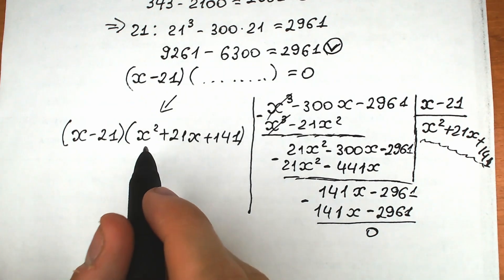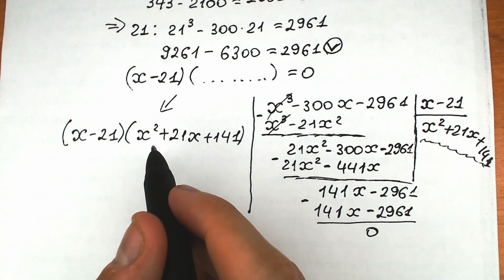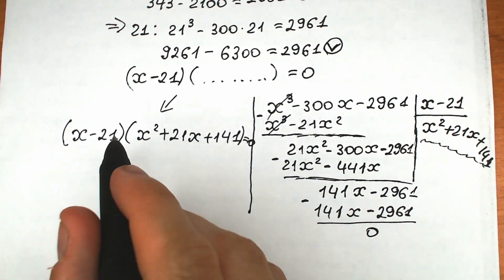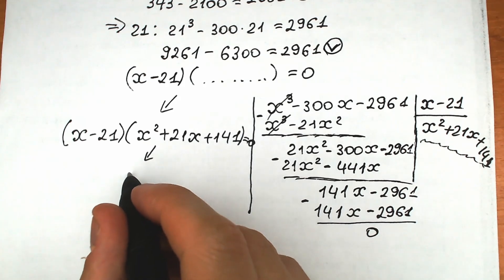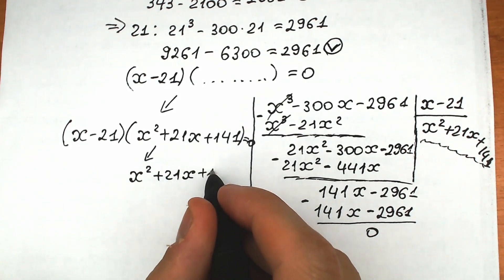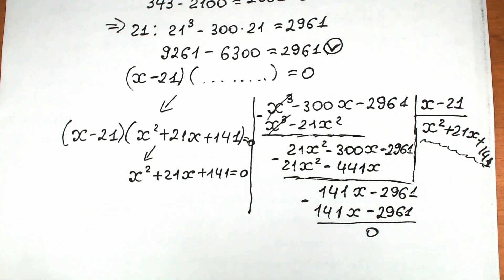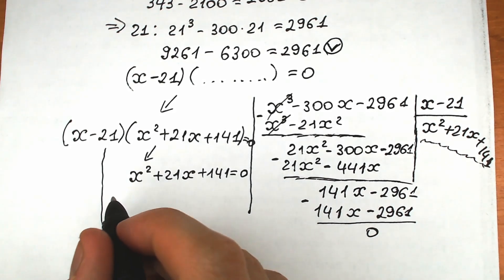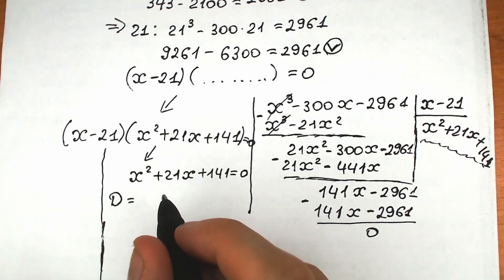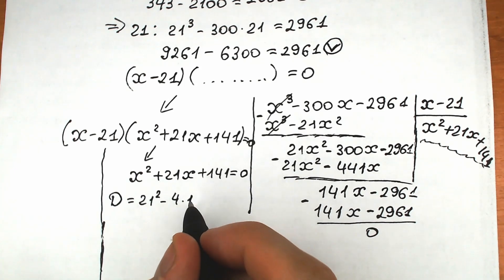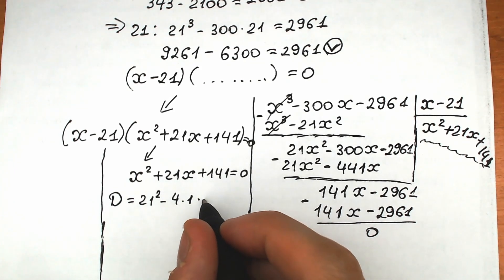By the zero product property, either x minus 21 equals zero, or x squared plus 21x plus 141 equals zero. Let's work on the quadratic. Finding the discriminant: b squared minus 4ac equals 21 squared minus 4 times 1 times 141.